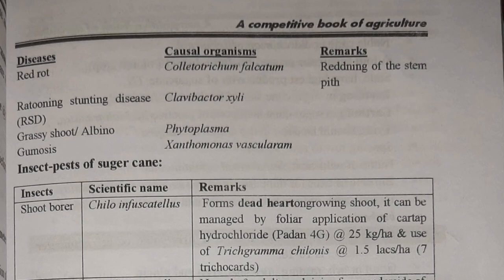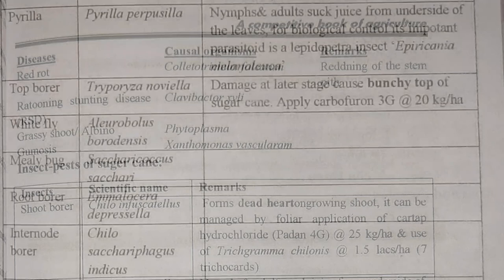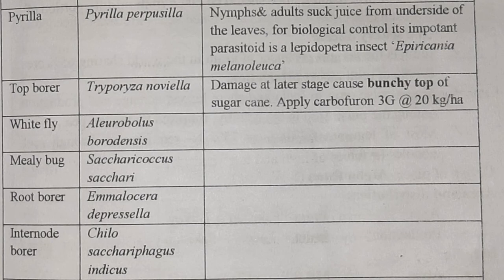Insect pests of sugarcane: shoot borer, scientific name Chilo infuscatellus — identified by dead heart in the growing shoot — managed by foliar application of cartap hydrochloride (Padan 4G) at the rate of 25 kg per hectare, and also by Trichogramma chilonis at the rate of 1.5 lakh per hectare, that is 7 trichocards. Pyrilla, scientific name Pyrilla perpusilla — juice from the underside of the leaves is sucked by nymphs and adults; biological control uses the lepidopteran parasitoid Epiricania melanoleuca.